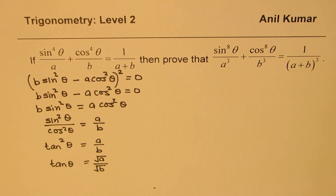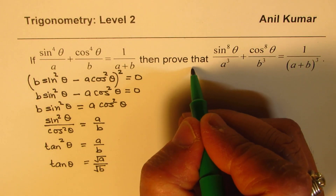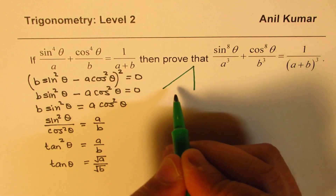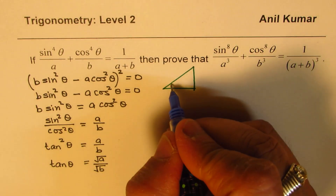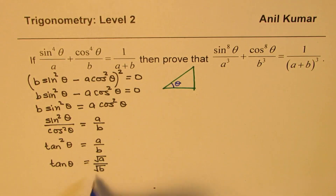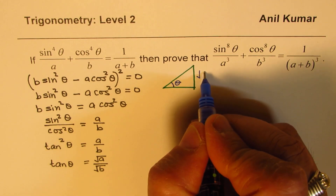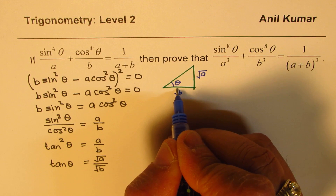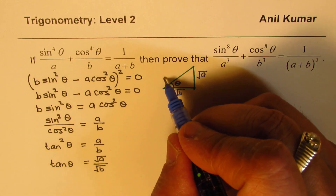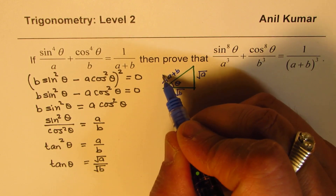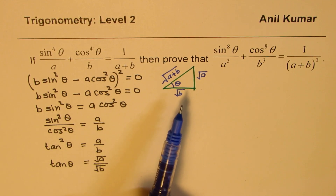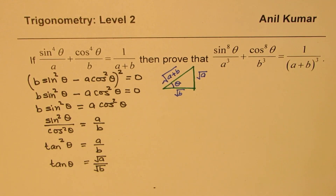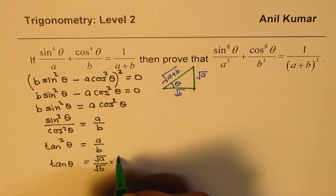Now that really means that if I have a triangle in which the angle is theta, since tan θ equals √a over √b, that is the ratio of the opposite side to the adjacent side. The opposite side is √a, the adjacent side is √b, and the hypotenuse would be √(a + b). So that leads to the triangle which we have here.